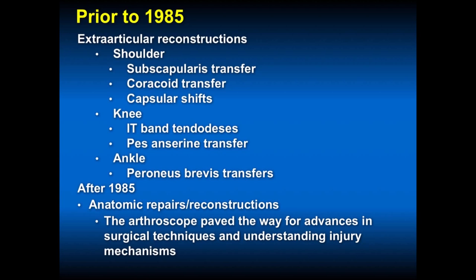Back then, our coracoid transfers were a Bristow. Now it's a Latarjet, which is a variation of a coracoid transfer. Sometimes we use the coracoid; more often we use an allograft, and we also address and repair the capsule back anatomically, then use that bone transfer technique in severe anterior instability cases.